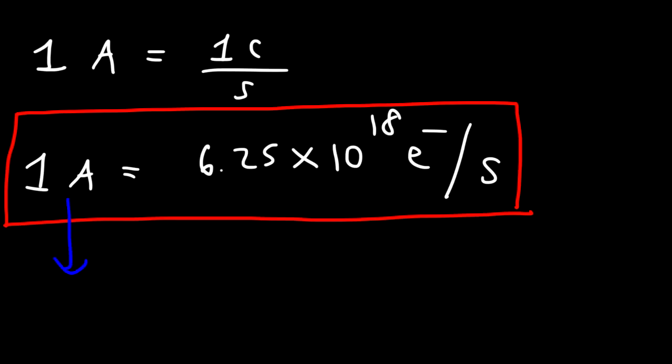This helps you get a better understanding of what an amp truly means — it tells us how much charge is flowing per unit time. You can describe an amp two ways: one coulomb of charge flowing per second, or 6.25 times 10 to the 18 electrons flowing in a circuit every second.